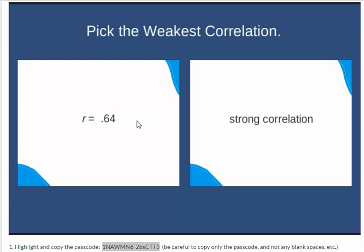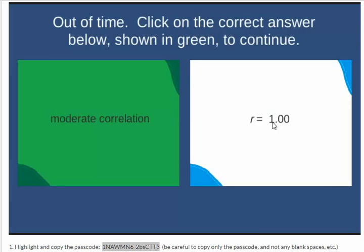So if I see strong, I know it's not going to be strong. If I see a 1, I know it's not going to be 1, because those are both examples of strong correlations. If I see moderate, the other card could be a stronger correlation, or it could be a weaker correlation.